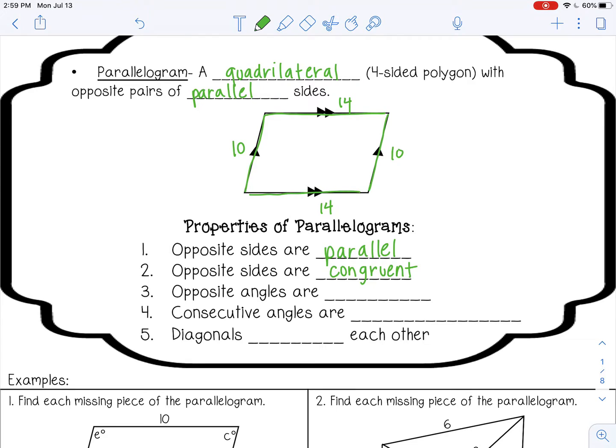The next property is opposite angles are congruent. So if this angle was 100 degrees, this angle would be 100 degrees. And if this angle was 80 degrees, this angle would also be 80 degrees.